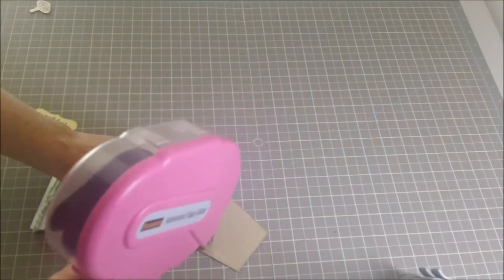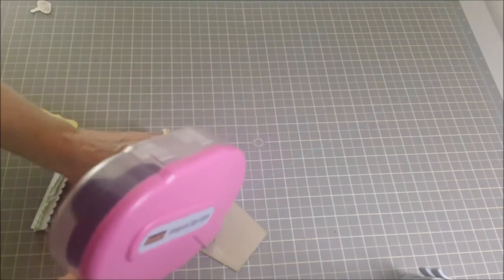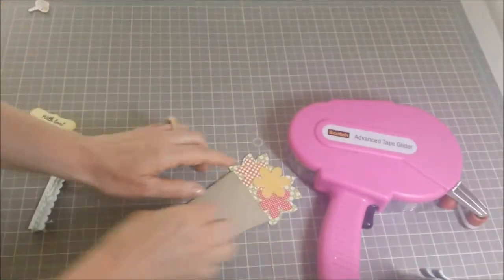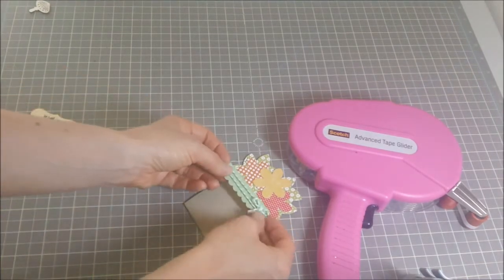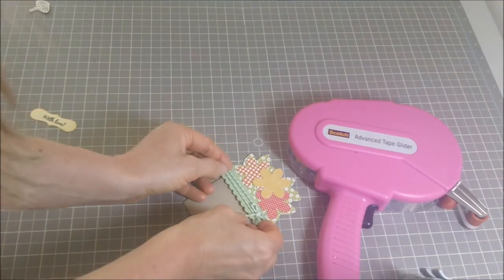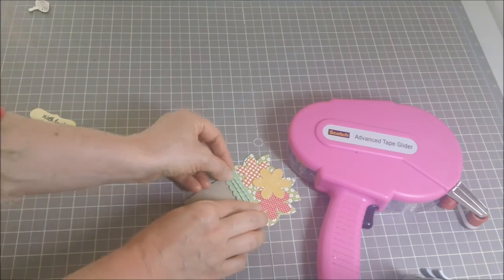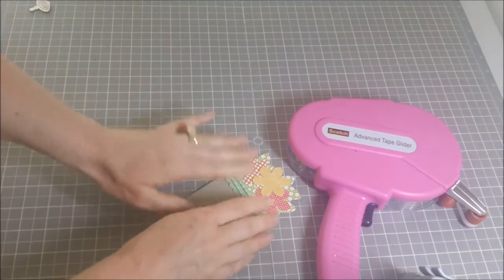Rather than add that there right onto that, because I have the twine on there I think it's gonna be a little harder to rub my ATG tape onto there, so I'm just gonna do it this way. How cute is that! Oh adorable.